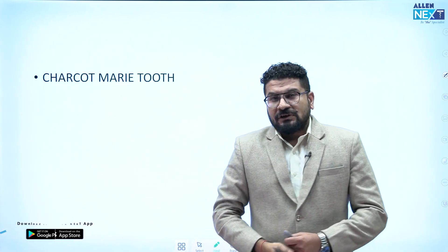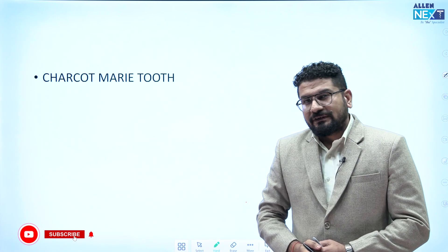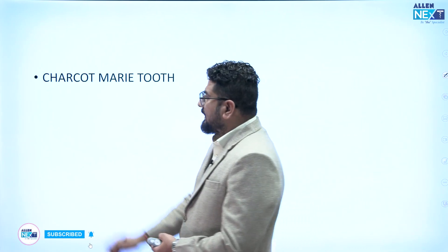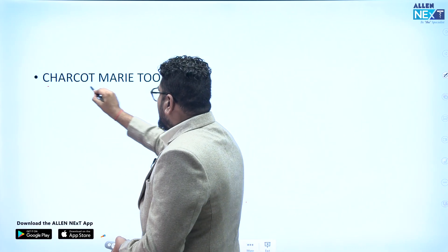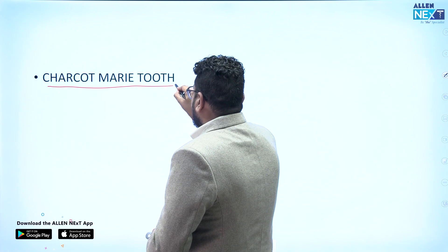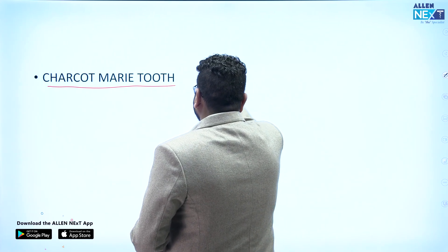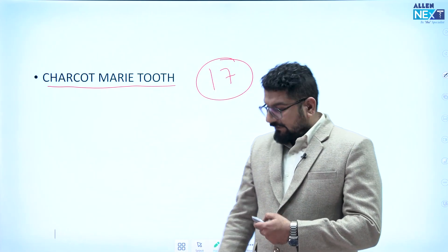Charcot-Marie-Tooth disease. Again, count the spelling of 'Charcot-Marie-Tooth' and this will come to 17. So Charcot-Marie-Tooth disease is associated with chromosome 17.